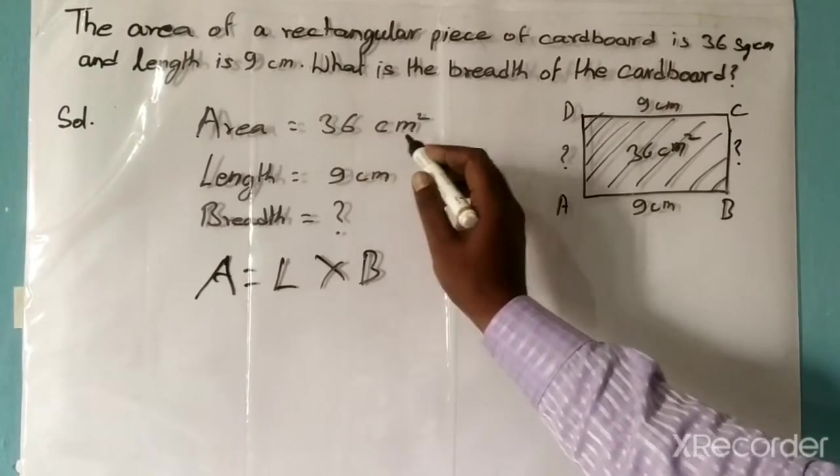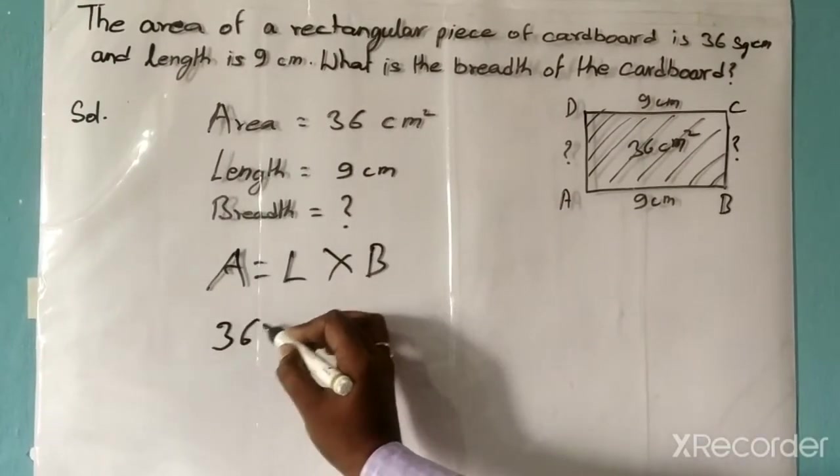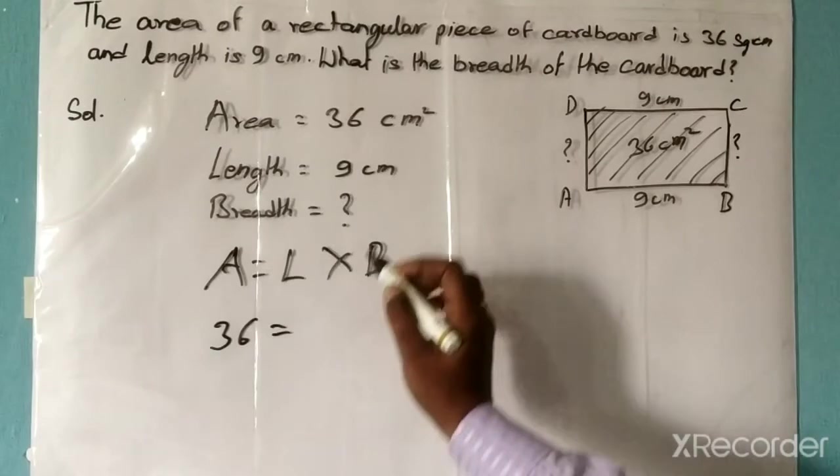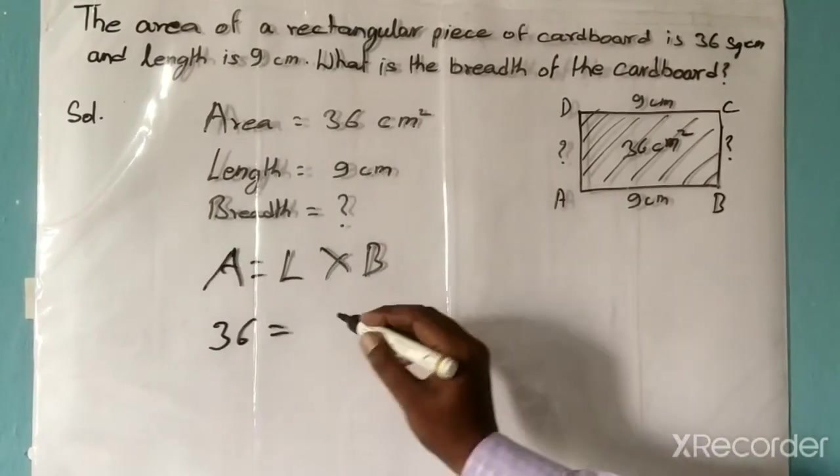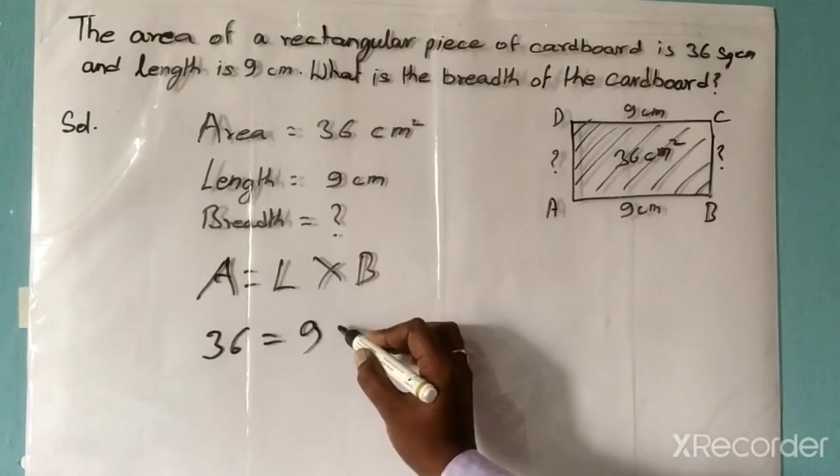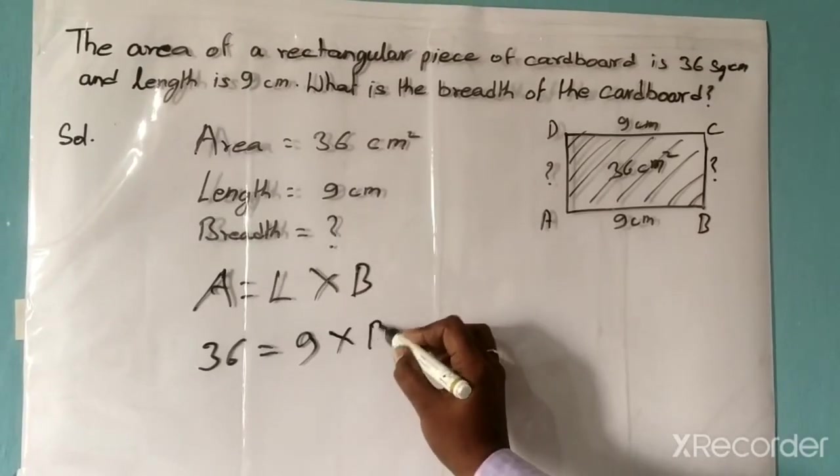So area is 36 square centimeters, that is 36 equals length is 9 times, let breadth be B.